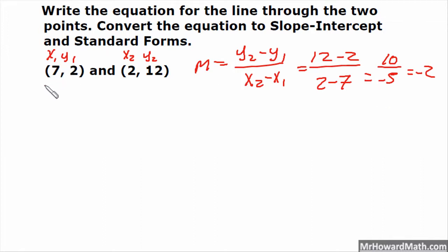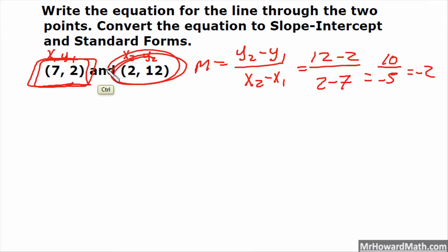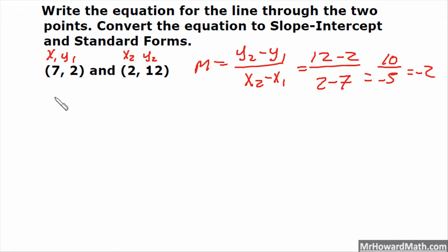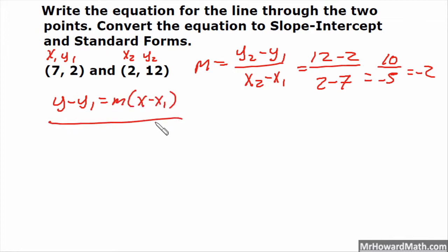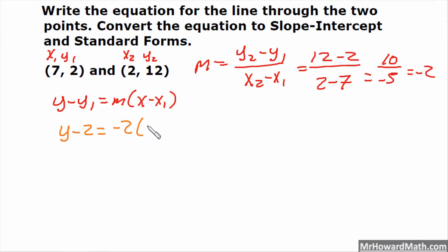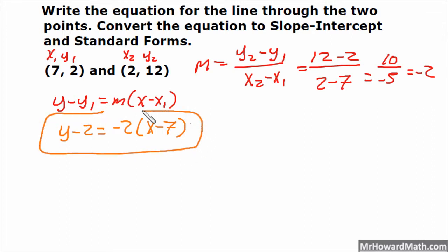Now we need to choose a point. I am going to choose this one. To write it in point-slope, I need the slope and a point. We could also use the other one, but I am choosing the first one. So in point-slope, y minus y1 equals m times x minus x1 — it is a good idea to write this every single time so that you commit it to memory. So that would be y subtract 2 equals our slope, negative 2, times the quantity x subtract 7. That's our point-slope form.